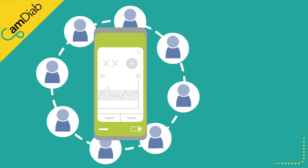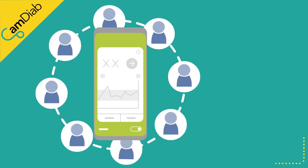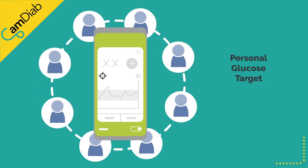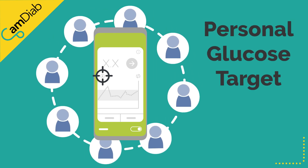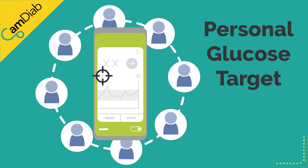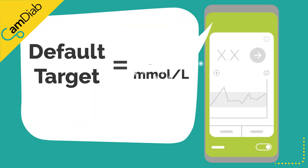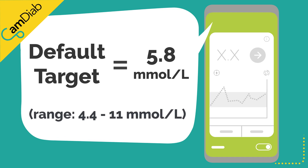MyLifeCam APS FX's algorithm has a customizable personal glucose target that it aims to achieve when auto mode is running. The default target is 5.8 millimoles per liter. You are able to set this target anywhere between 4.4 and 11 millimoles per liter across the 24 hours of the day.